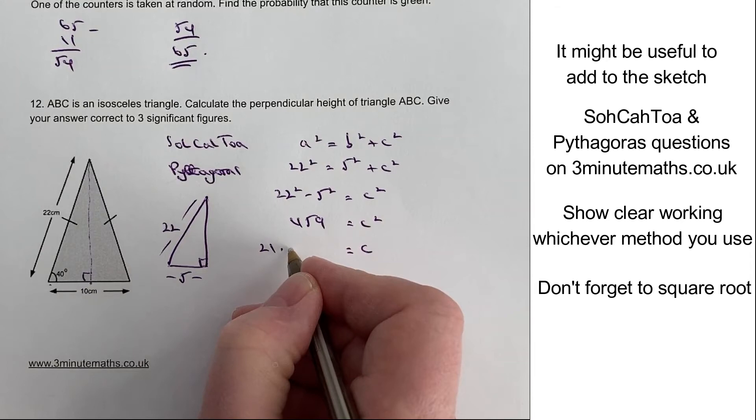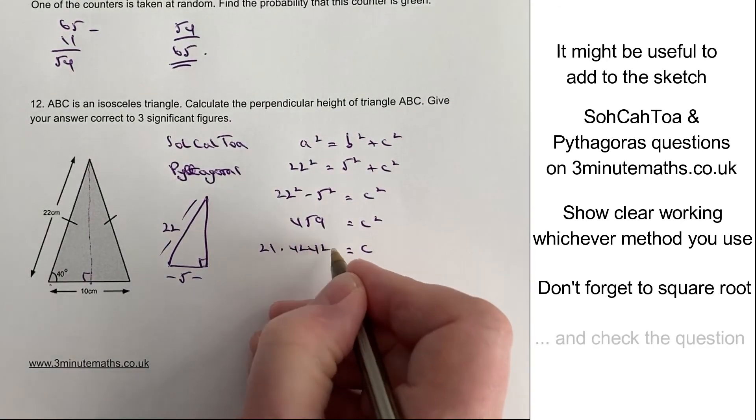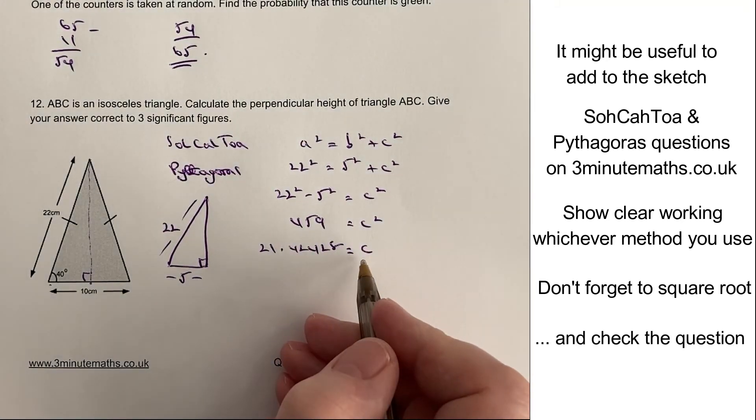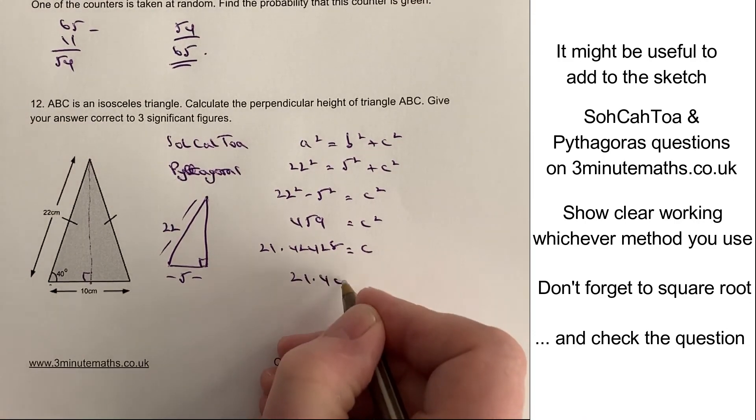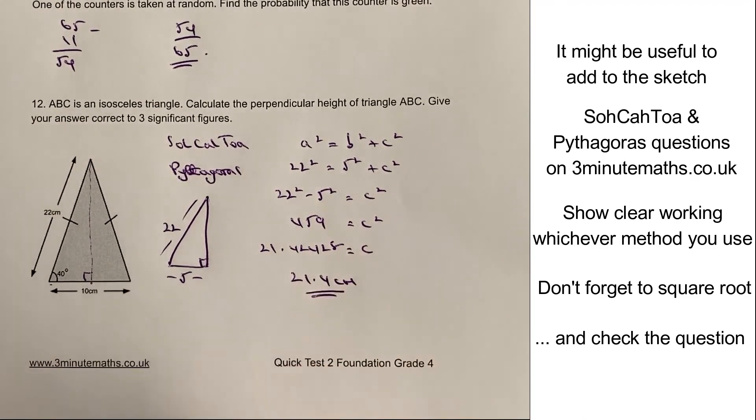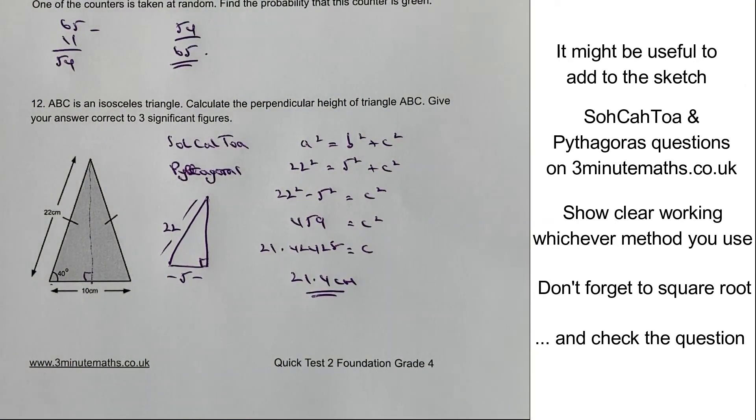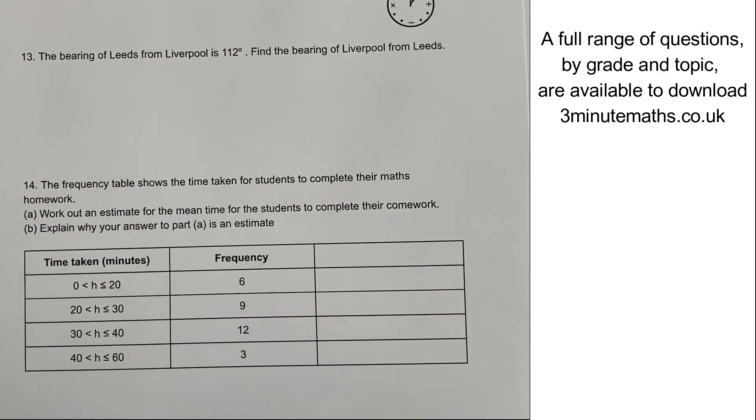So c squared is going to be 459. If I then square root that, I'm going to get that c equals, oh, something very long, 21.42428. And to three significant figures, it's going to be 21.4 centimetres to three significant figures, as per the question. So we're moving on at a fairly good pace. Let's have a look then at the final two questions,